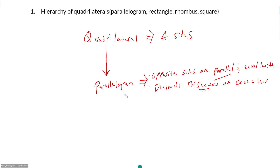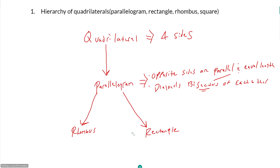Once we have a parallelogram, the next step is we can get to either a rhombus or a rectangle. A rhombus is a parallelogram, which is a quadrilateral. A rectangle is also a parallelogram and a quadrilateral, but a rhombus is not necessarily a rectangle. For a rhombus, all sides are equal.